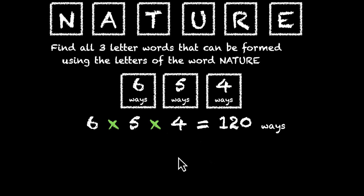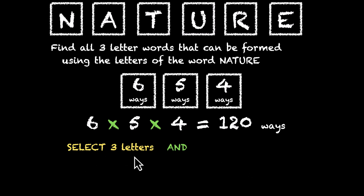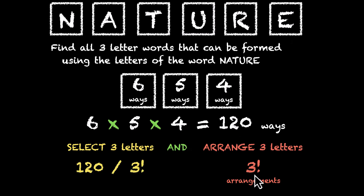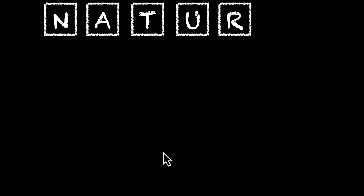Now if we do this step-by-step, we first select three letters and then arrange each selection of these three letters. For every selection, we have three factorial ways of arranging them. This means if we have to figure out the number of ways to just select three letters out of six different letters, this can be done in 120 divided by three factorial ways — 120 divided by six — that's 20. So this can be done in 20 ways.